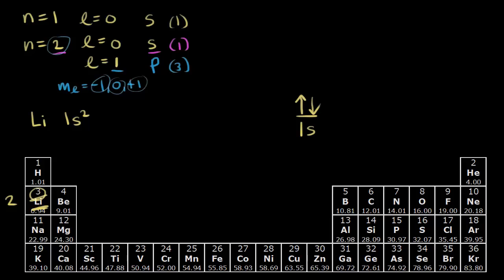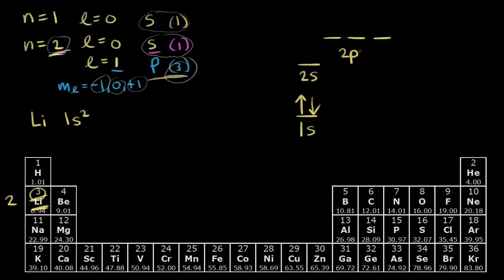Let's draw those in on our orbital diagram. We already drew in the s orbital in the first shell. Next, let's draw in the s orbital in the second shell — the two s orbital, which is of higher energy. And then we have three p orbitals in the second energy level, also of higher energy: 2px, 2py, and 2pz. It doesn't really matter which is which.